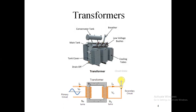We use normal 230-volt supply in our homes. So after transmission, when we have to use this power, we step down the voltage. On the distribution side, the transformer is used as a step-down device.